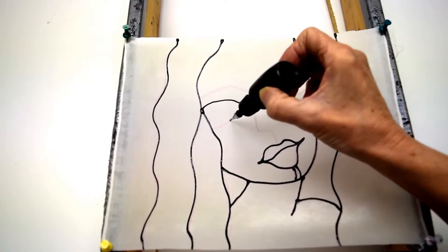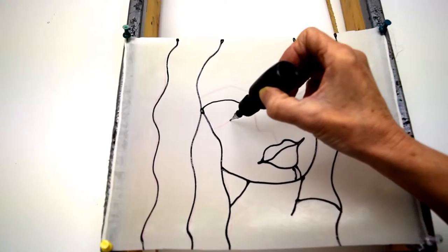Once it's dry, then you can paint it with the dye because the dye will then bleed up to the lines and not go through them.